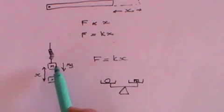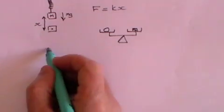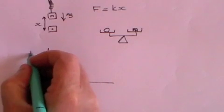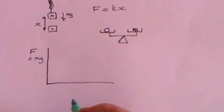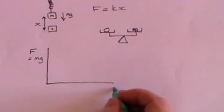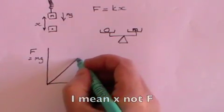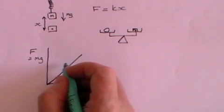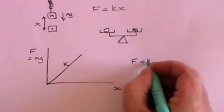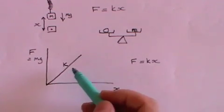If you perform an experiment where you take the same spring but put different masses on it and measure the extension x that each mass gives, you can plot the force — which equals mass times gravitational attraction — against the extension. What you find is that you get a straight line, and the gradient of that line will be k, because F equals kx. That is Hooke's law.